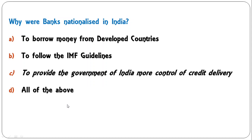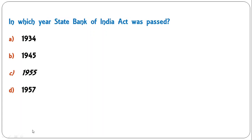Why were banks nationalized in India? Options are: to borrow money from developed countries; to follow IMF guidelines; to provide government of India more control of credit delivery; or all of the above. The correct answer is C — to provide government of India more control of credit delivery.